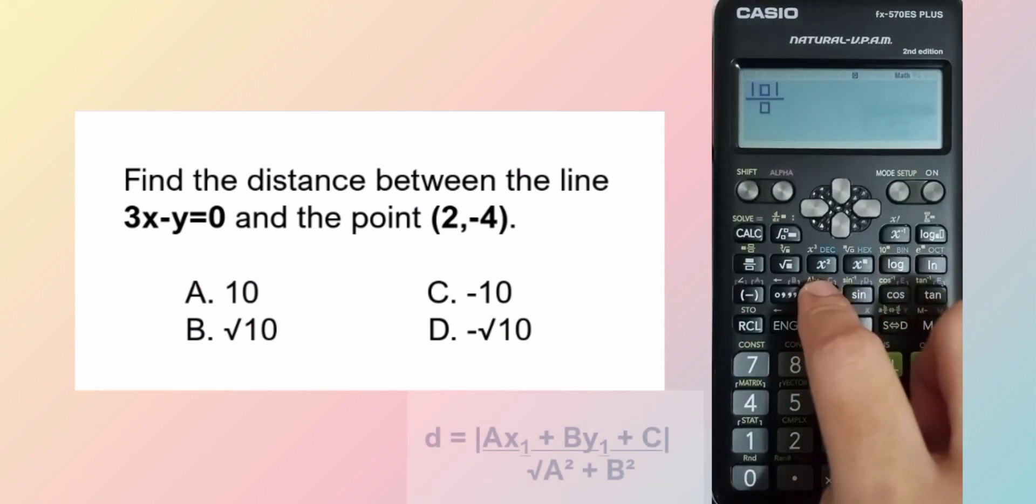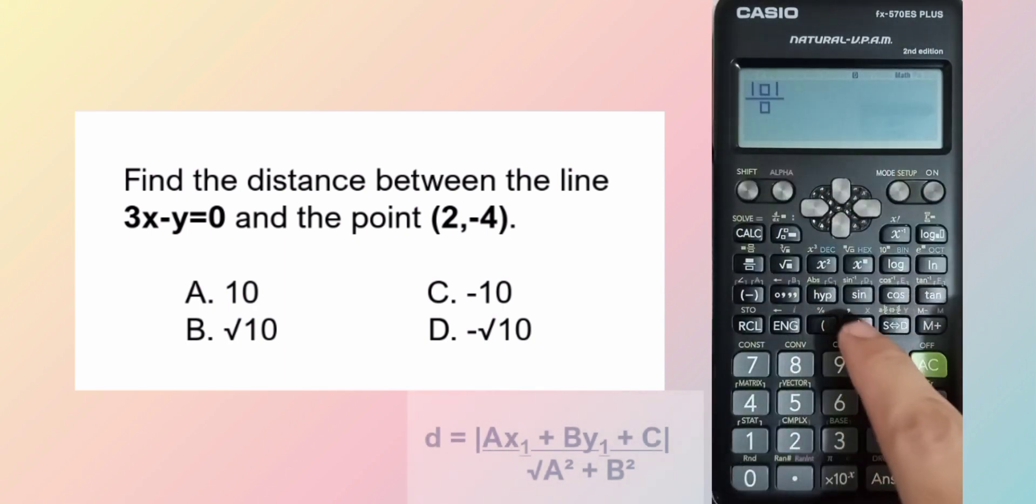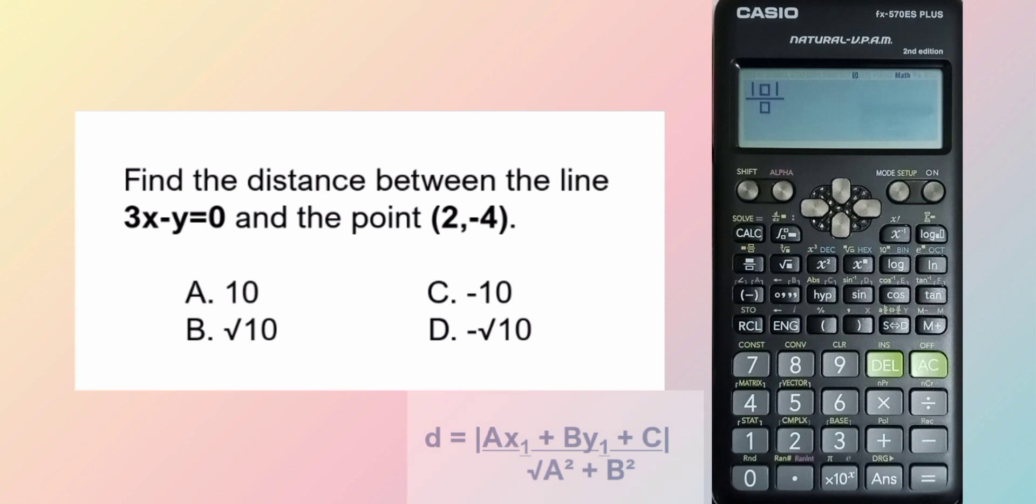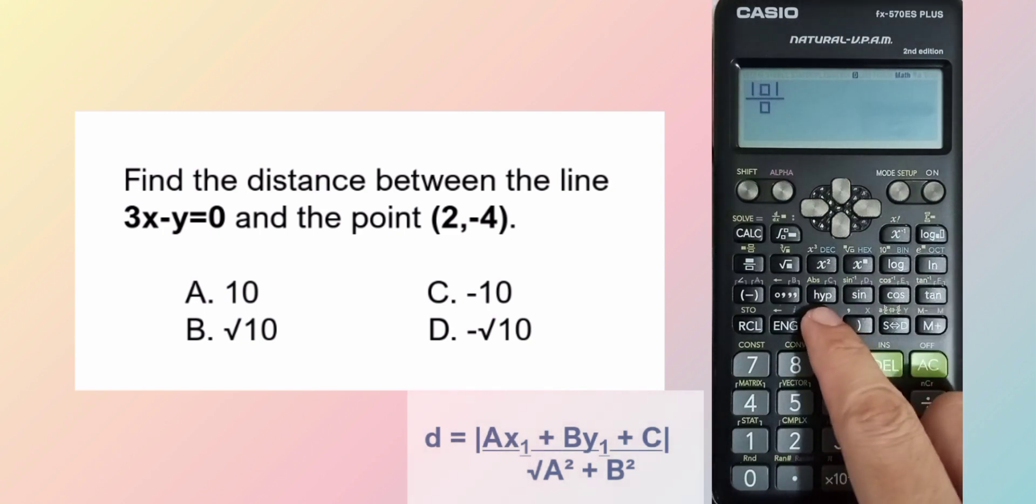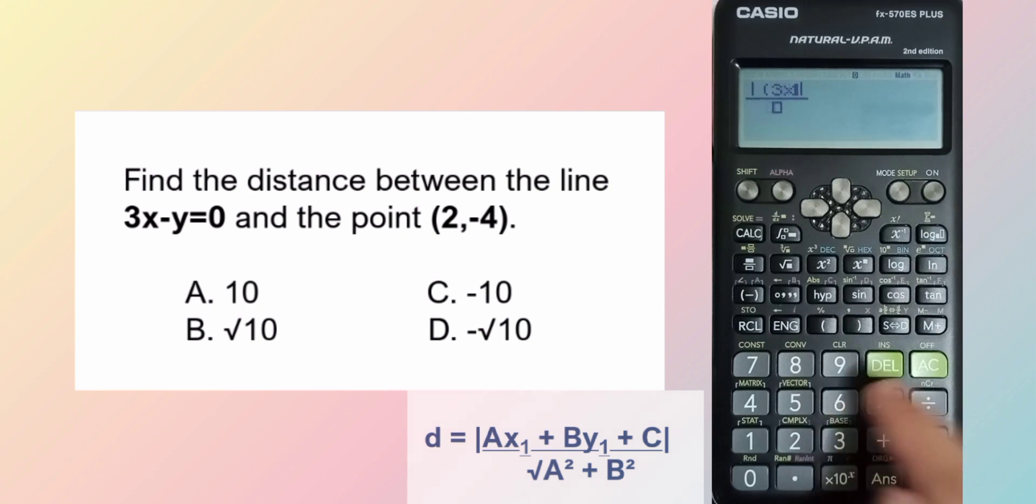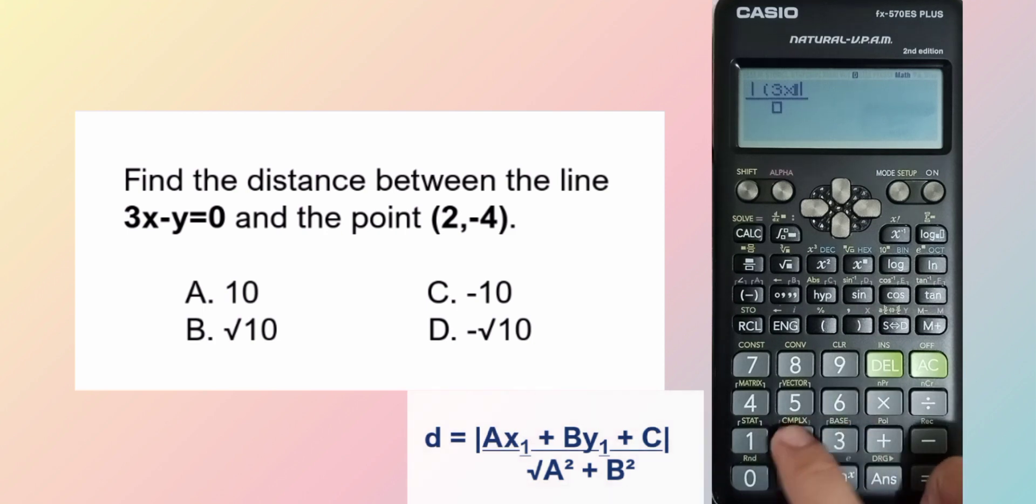Absolute value of A. A is the coefficient of x. So 3 times x sub 1. x sub 1 is the x coordinate of the point. So 3 times 2.